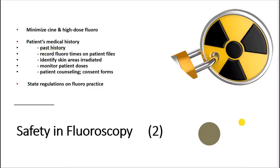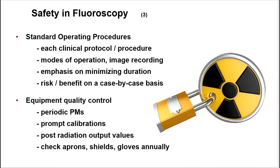You should be familiar with state regulations on the practice of fluoroscopy and with your patient's history. You need to record fluoro times on the patient's files, identify skin areas that have been irradiated, monitor patient doses, and at times use patient counseling and consent forms. Equipment quality control is essential — you need periodic preventive maintenance, prompt calibrations, posted radiation output values, and annual checks of aprons, shields, and gloves. Your facility also needs to have standard operating procedures.